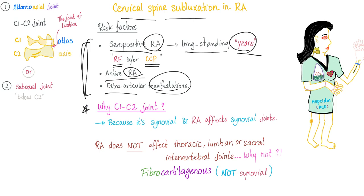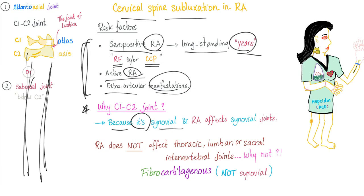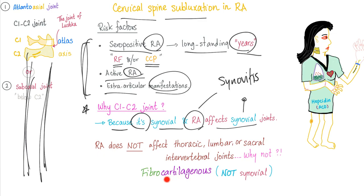Why the C1 and C2 joint and not the rest of the vertebral column? Because this is the only synovial joint in the vertebral column, and rheumatoid arthritis affects synovial joints — that's why the hallmark of the disease is called synovitis. Why not the thoracic, sacral, or lumbar spine? Because those are fibrocartilaginous joints, and rheumatoid arthritis only affects synovial joints.